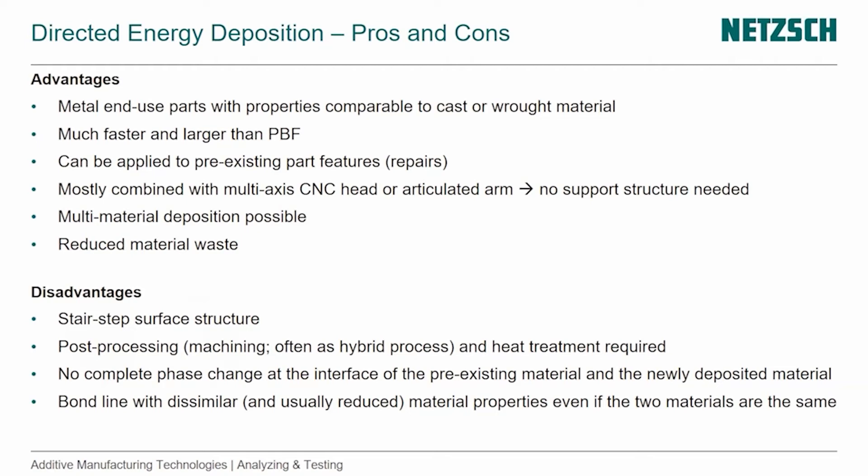You take a metal part out of service, put it in your machine, and you can actually fuse and weld your part back together almost as new. It's mostly combined with a multi-axis CNC head or an articulated arm so that you need no support structure. Multi-material deposition is also possible, as we saw in the video, and that helps us to reduce material waste.